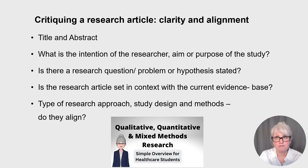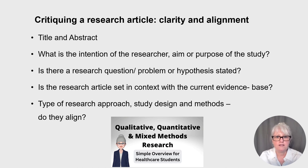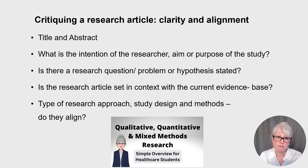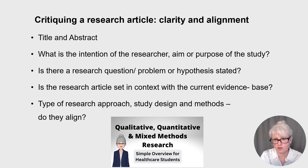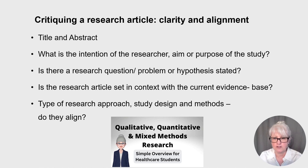Is the study set within the context of a current evidence base? We also need to know what type of article is being presented — is it a research study, a systematic review, or just an anecdotal opinion piece? Understanding different types of research — qualitative, quantitative, and mixed methods — is helpful when critiquing whether there's misalignment. For example, do the research question, the methods used, and the data analysis all marry up and align, or is information missing or confusing?